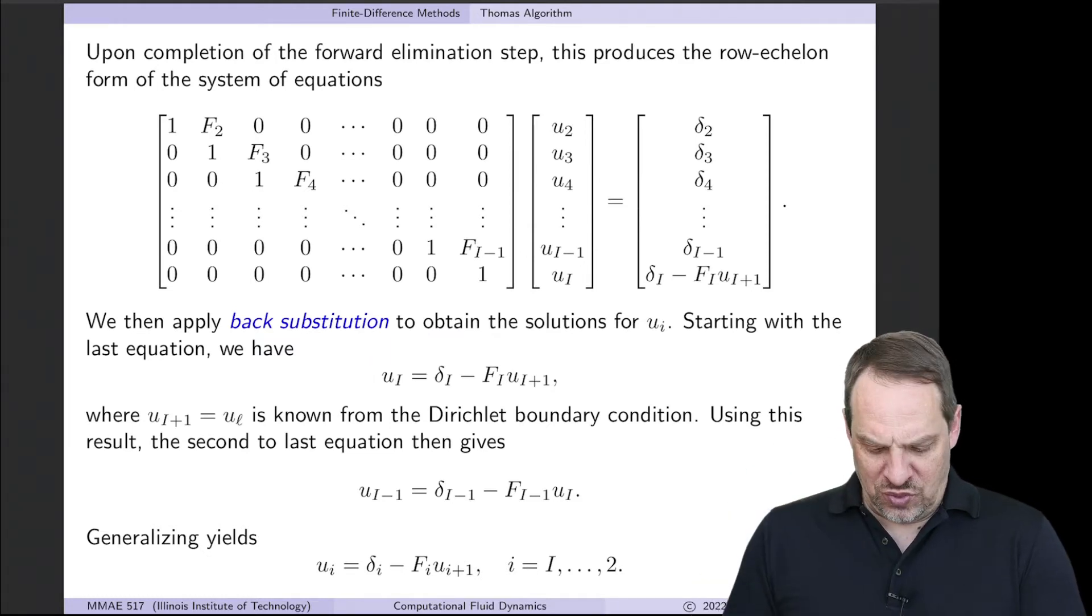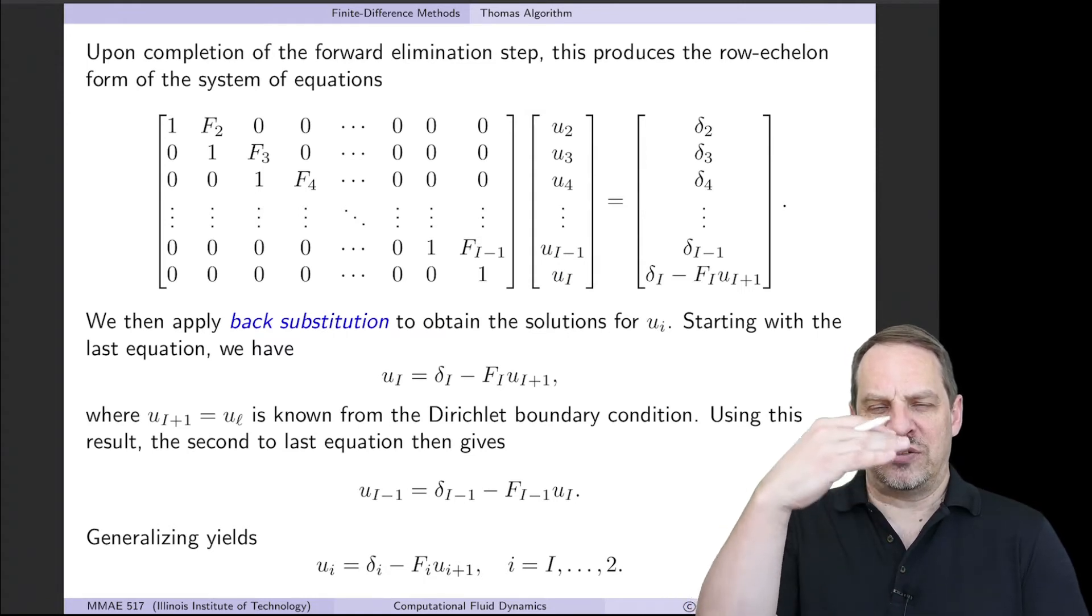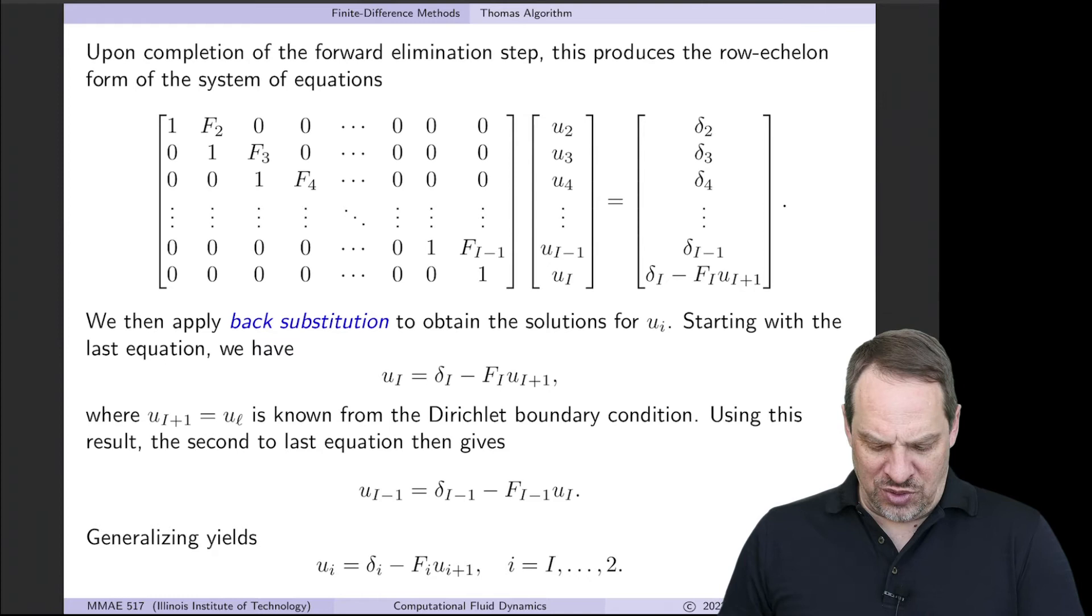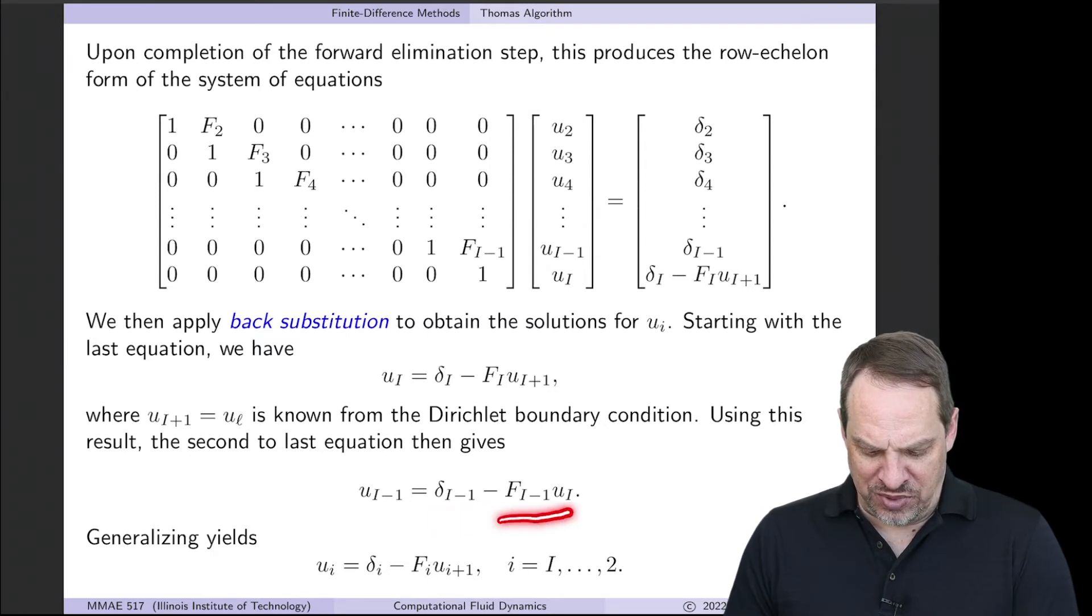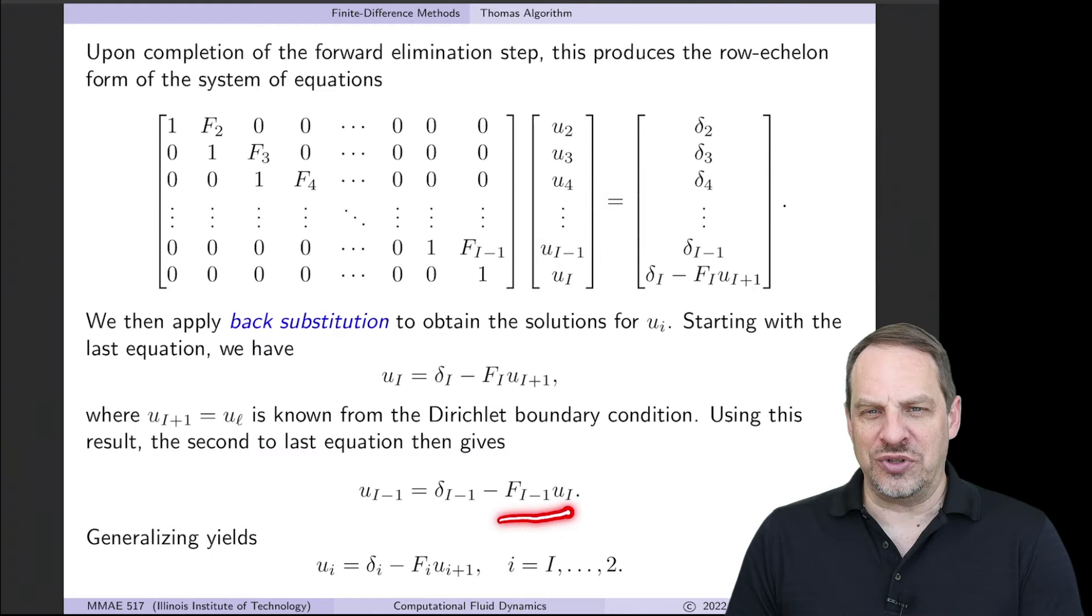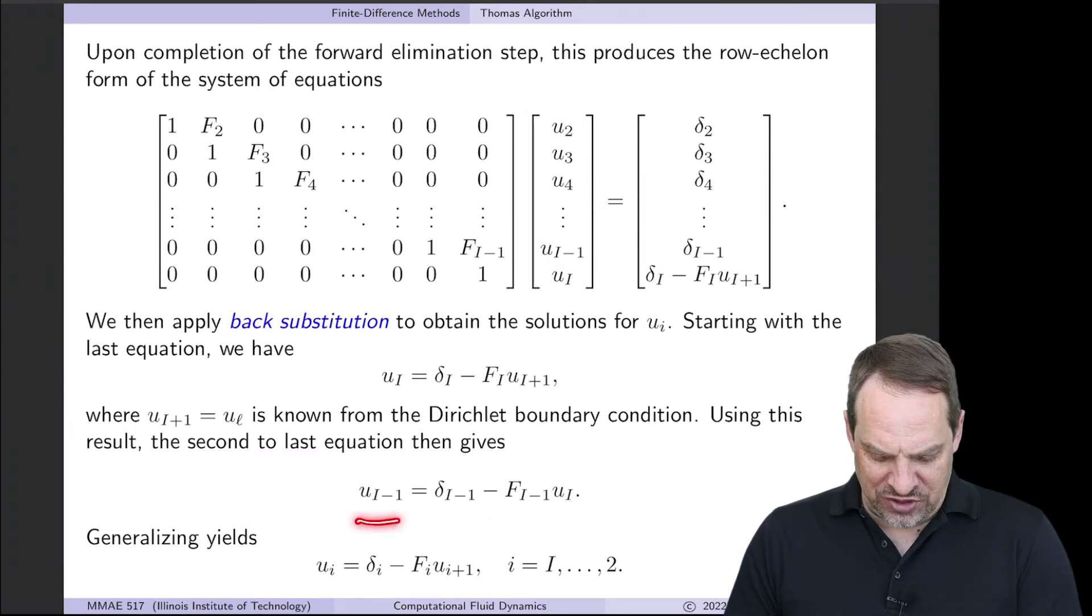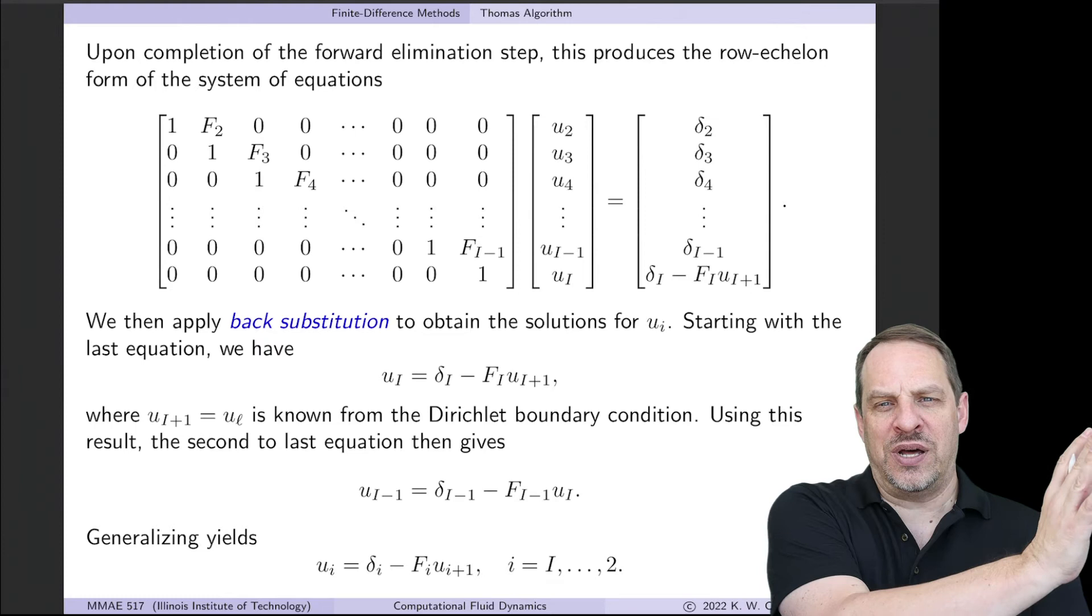And then we back substitute. Once I know U times capital I, I can use that with this term to get the U sub i minus 1. And then we continue to back substitute until we get to the top, and then we have the solution for all the U's. So for example, from this second to last row, we determine that U sub capital I minus 1 is equal to delta sub capital I minus 1, minus capital F sub capital I minus 1, times U sub cap i. And if we generalize that, it's going to look exactly the same. Just put in the index little i: Ui equals delta sub i, minus cap F sub i, times U sub i plus 1.